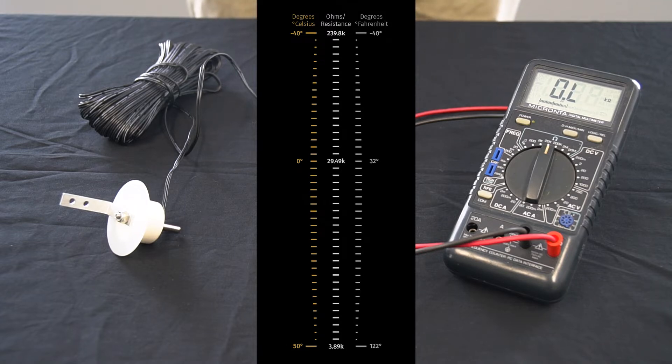At room temperature, roughly 77 degrees equals about 10,000 ohms.